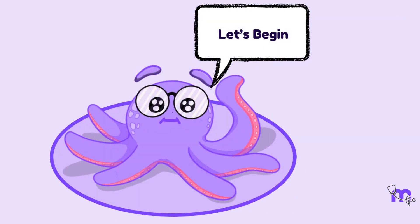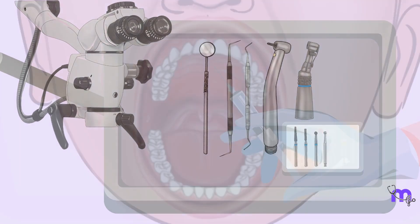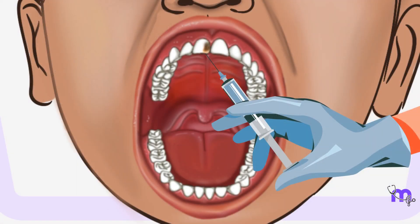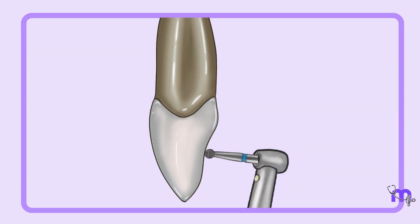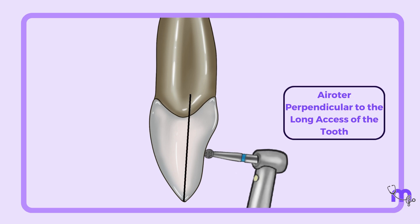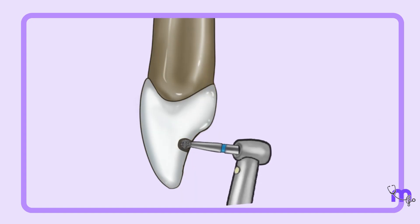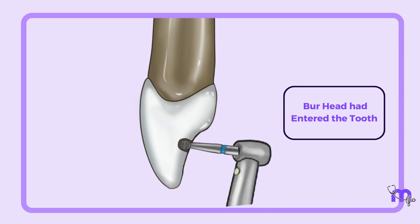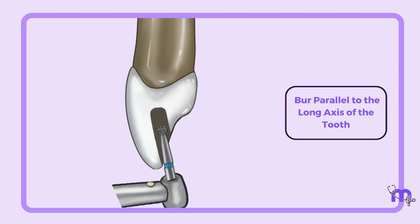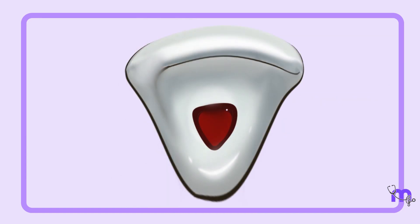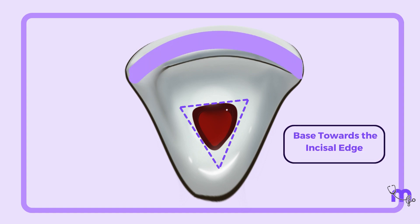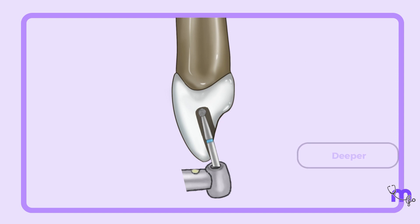With this prerequisite knowledge, I arranged my axis-opening instruments and injected local anesthesia at the site of interest. I then gained access by removing the enamel in the center by holding the air rotor perpendicular to the long axis of the tooth with a number 4 round burr. On realizing that the burr head had entered the tooth completely, I slowly made the burr parallel to the long axis of the tooth. The axis cavity resembled a triangle, with the base of the triangle being towards the incisal edge. I continued to go deeper and laterally till I felt a drop.